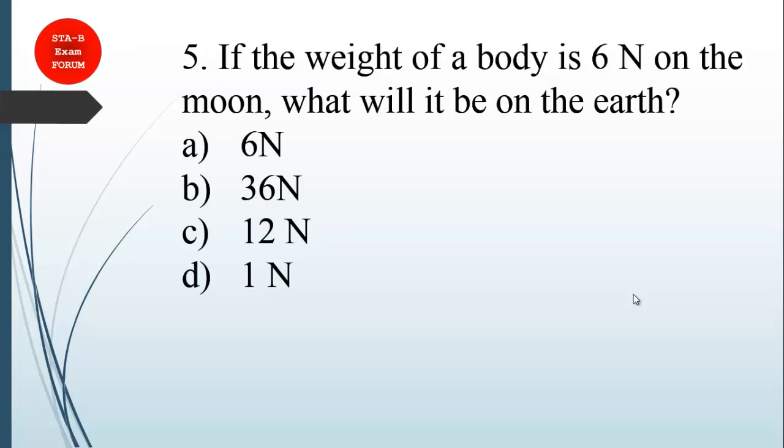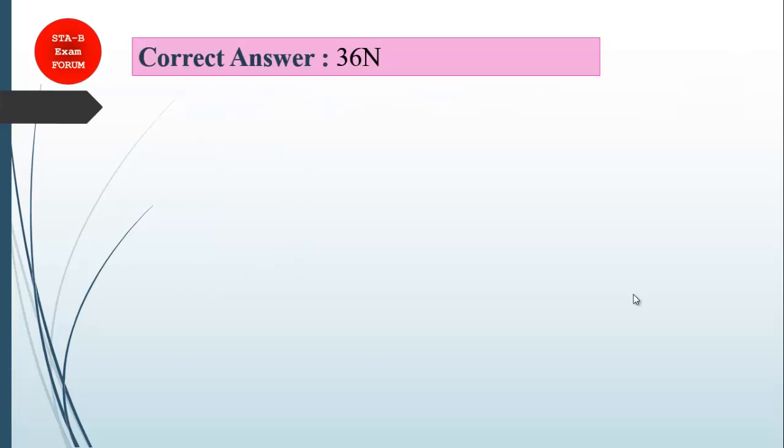If the weight of a body is 6 Newton on the moon, what will it be on Earth? Weight is given as 6 Newton on moon. As you know, on the moon it is one-sixth of whatever the mass we have on Earth, so it will be six times that on Earth. The correct answer is 36 Newton. If you have 36 Newton on Earth, it will be 6 Newton on the moon - it will be one-sixth of that mass on Earth.